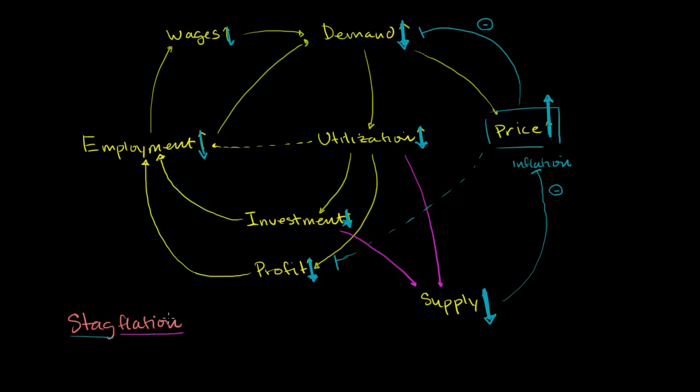So stagflation is that situation where you have some type of shock to the system, where in the classic scenario, it hits supply so hard, it causes a massive inflation in one part of the economy. And in this case of oil, it affects other parts of the economy. And then all of that kind of throws a monkey wrench in everything else.